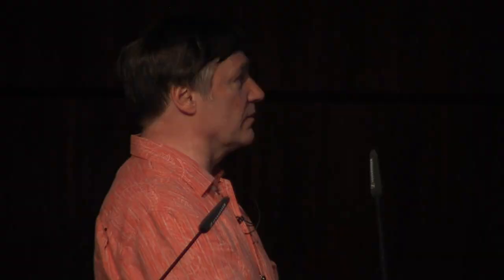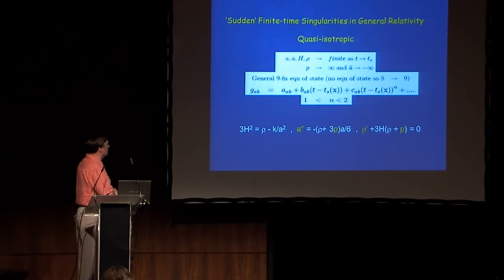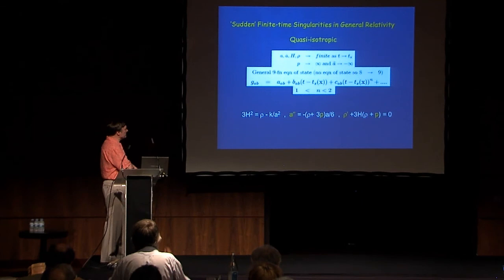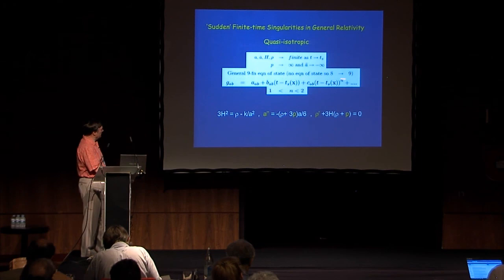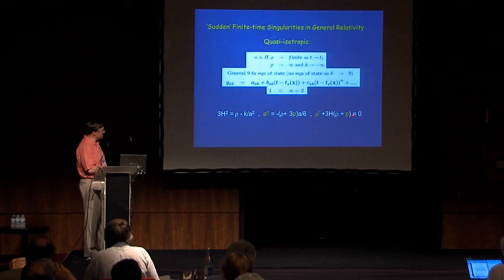In the matter case, there are eight free functions. Regarding finite-time singularities in general relativity—the sudden singularities I introduced some years ago, where the acceleration becomes infinite and pressure becomes infinite—there is a very simple generic form for the metric. This turns out to be a nine-function general solution, nine rather than eight because no equation of state is assumed. In the Friedman equation, there are singularities in P, in ρ-dot, and in ä and P, but the density and expansion rate remain finite. These are not geodesic incompleteness singularities—they are quite different.